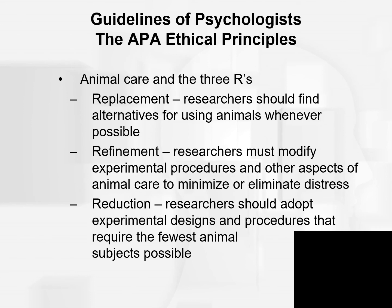Also part of the ethics of animal research guidelines are the three R's: replacement, refinement, and reduction. Replacement: researchers should find alternatives for using animals whenever possible — computer simulations or tissue samples instead of animals. Refinement: researchers need to modify experimental procedures and animal care to minimize or eliminate distress altogether. Reduction: researchers adopt experimental designs requiring the fewest animal subjects possible — if something can be done looking at three rats, there's no need to use ten or fifteen.